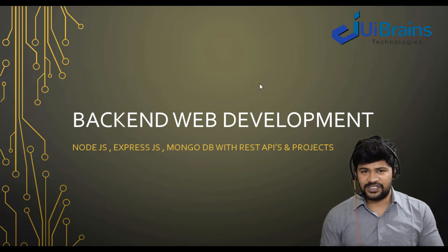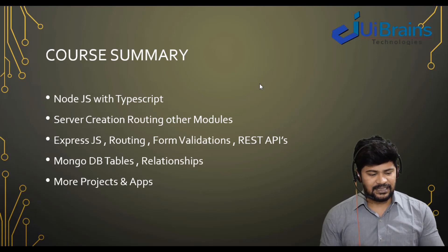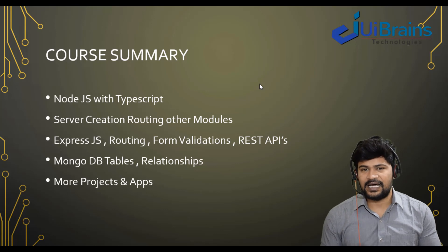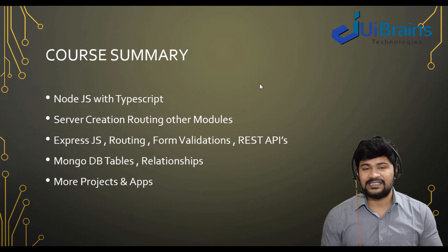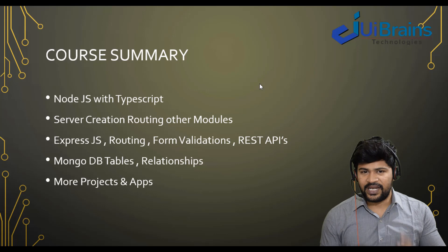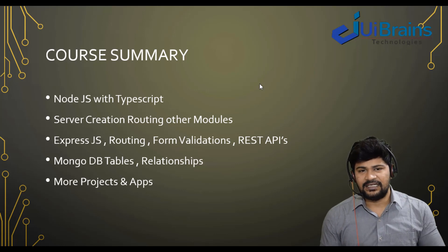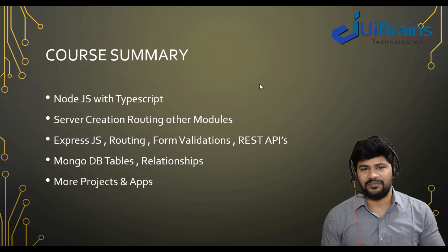Let's start with the slides. Here is the course summary. First we're going to start with Node.js — what it is, how to write basic programs, how to create a server, routing, and form handling. Then we'll start with Express.js: third-party modules, core modules, creating a server, routing, and REST APIs. Then MongoDB: how to structure tables and make relationships between them. Finally, once done with Node.js and MongoDB, we're going to make some projects and applications to get a clear idea of back-end web development.